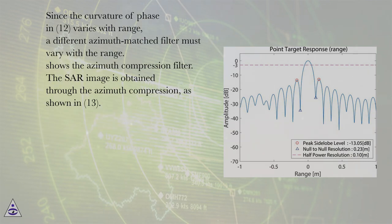Since the curvature of phase in (12) varies with range, a different azimuth matched filter must vary with the range. This shows the azimuth compression filter. The SAR image is obtained through the azimuth compression, as shown in (13).